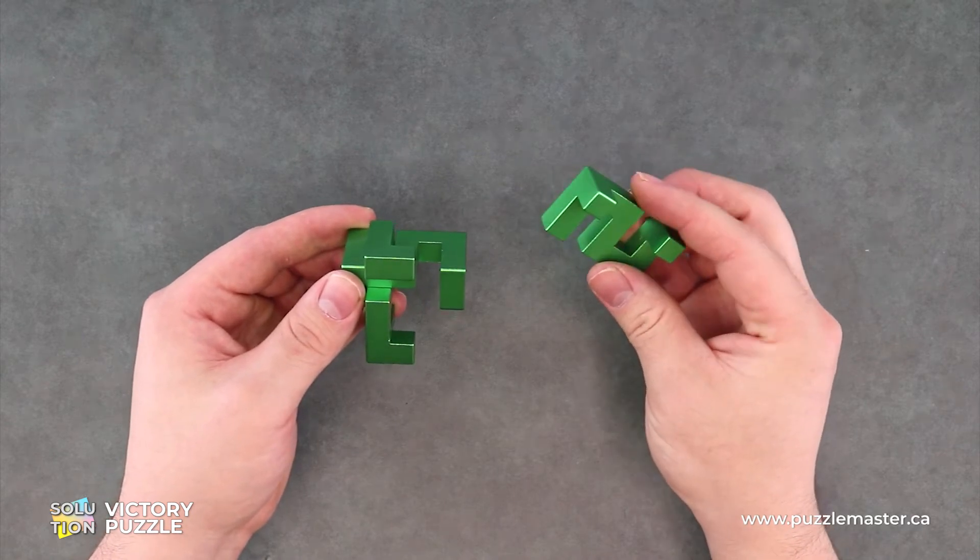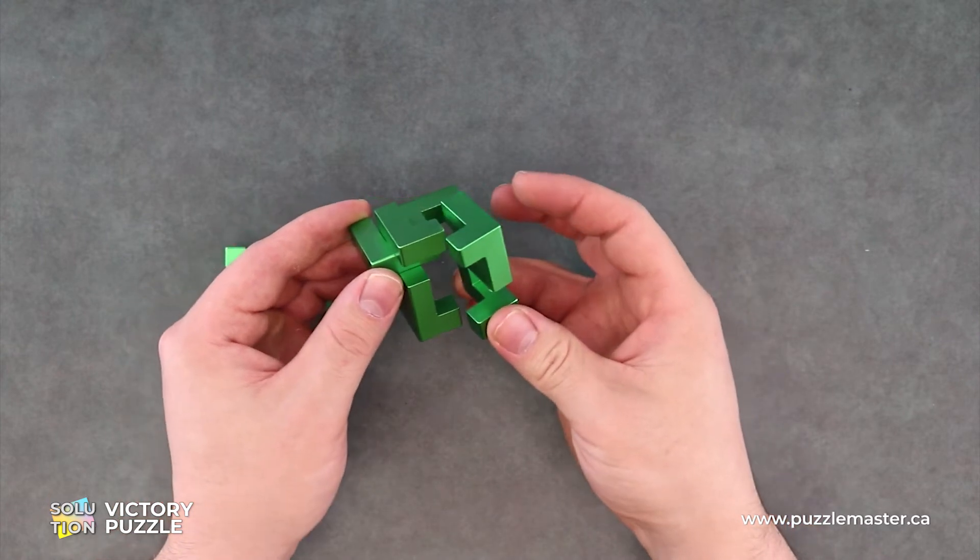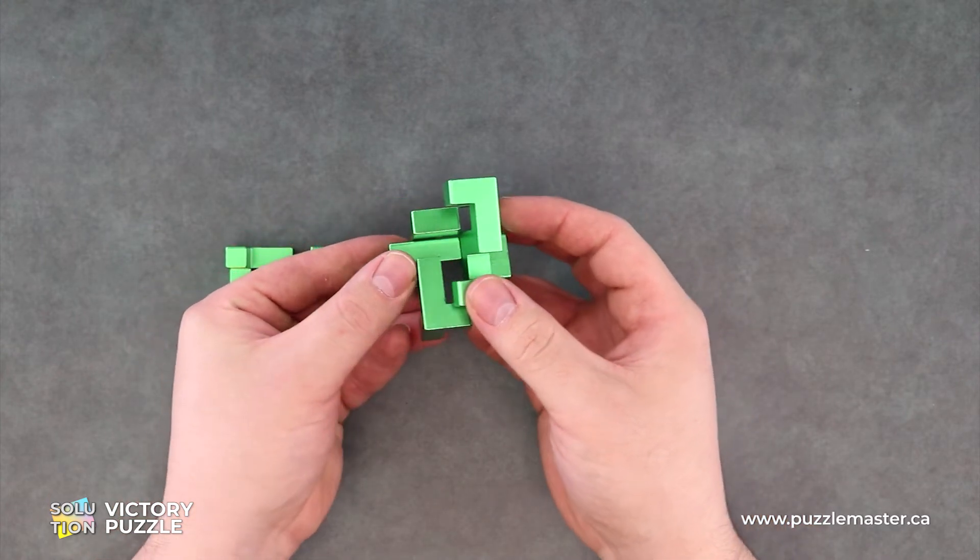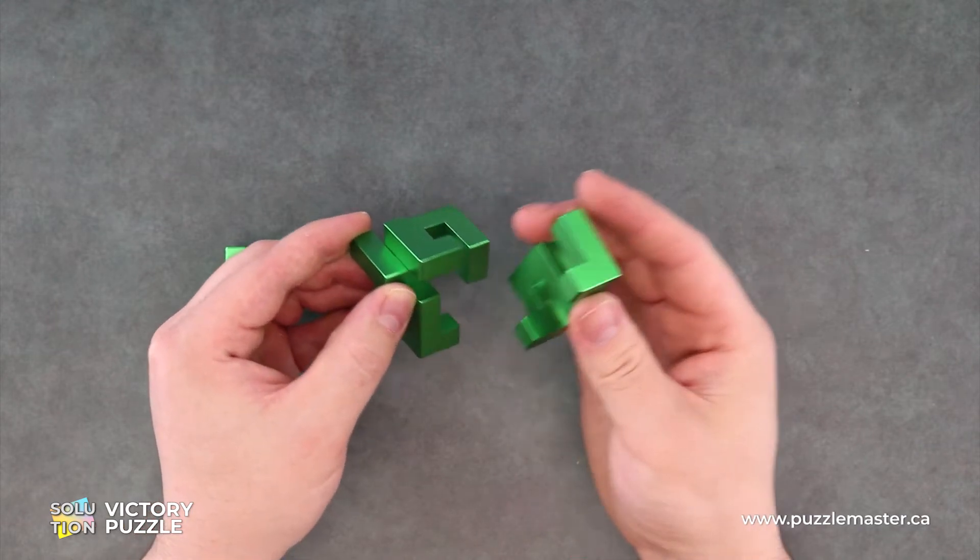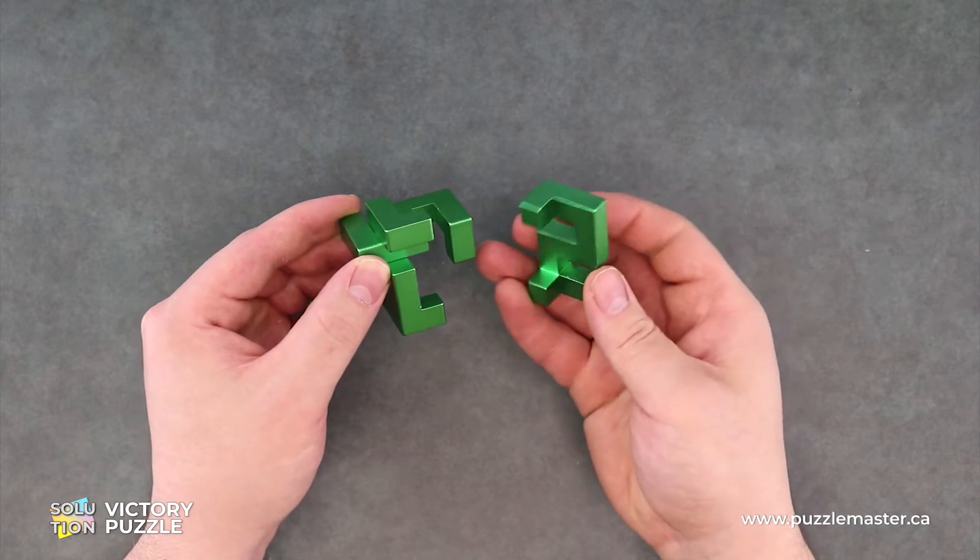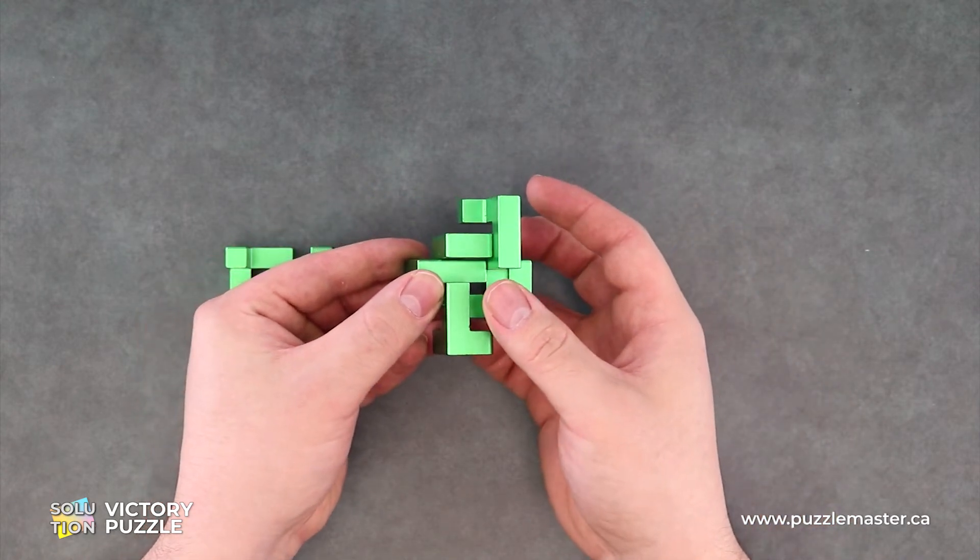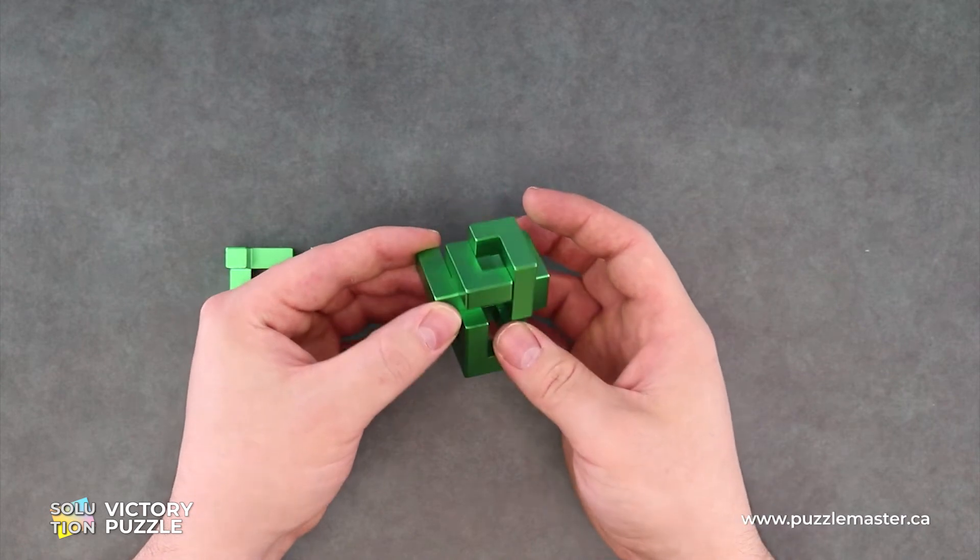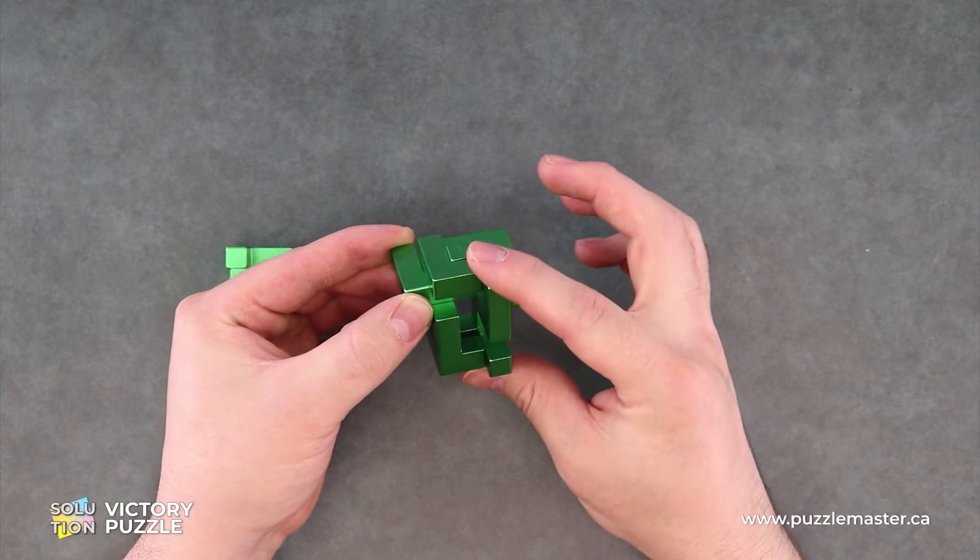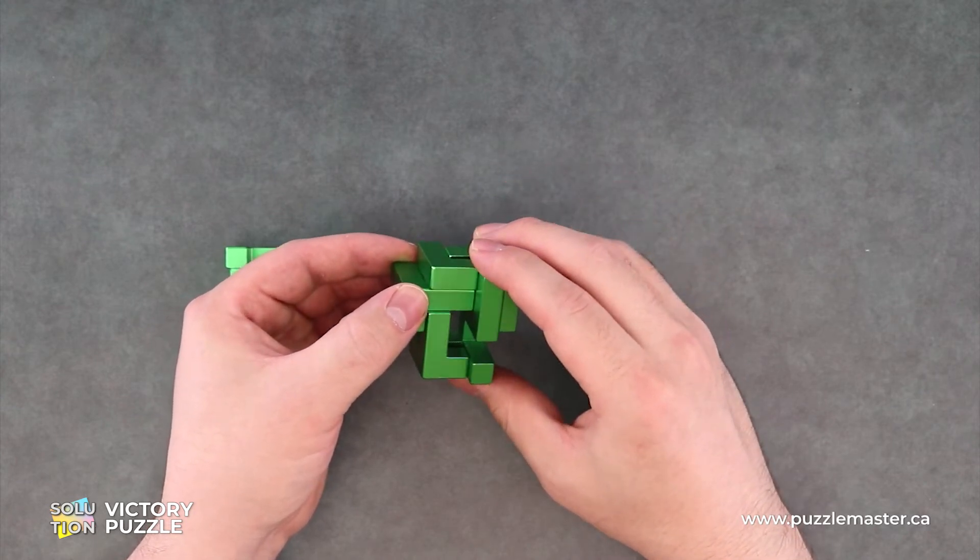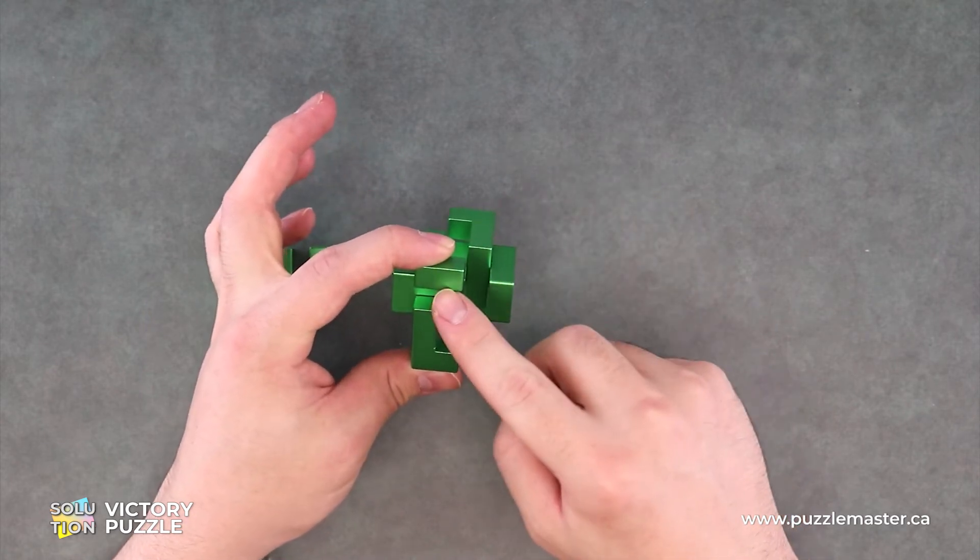We will take our next piece like this and we will overshoot it. Oh, putting them backwards. We will take our piece like this, overshoot it and down. Now we'll let that piece drop all the way down and we'll hold onto it by this piece.